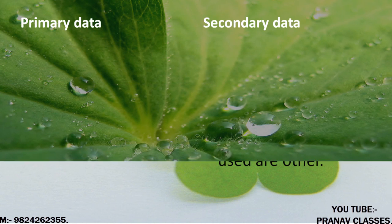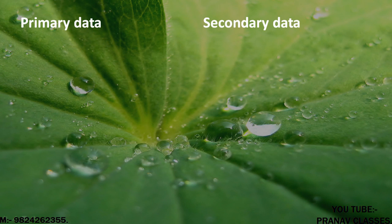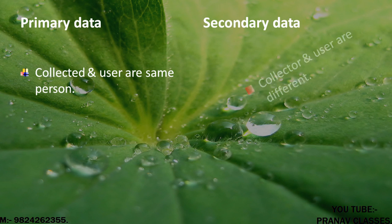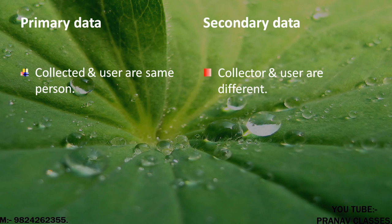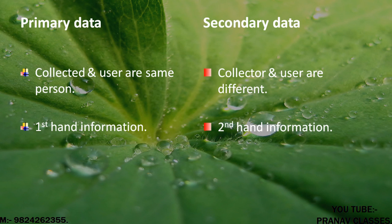In primary data, the collector and user are the same person, whereas in secondary data the collector and user are different persons. Primary data is first-hand information, whereas secondary data is second-hand information.